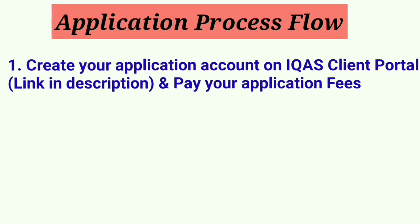Let's start with the Application Process Flow. If you are going for ECA with IQAS, you should follow this flow. The first step is to create your application account on the IQAS portal. They will ask you some basic questions and based on your answers, they create your profile on their portal with a unique reference number for your application.